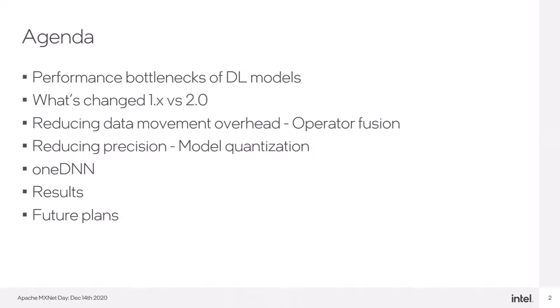And here's today's agenda. First, I'll talk about the performance bottlenecks of modern deep learning models, then quickly recap what has changed between MXNet 1.0 and 2.0 regarding optimizations. After this short introduction, I'll move forward to optimizations implemented for CPU. I'll show some results and finally talk about the future plans.